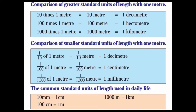Comparison of greater standard units of length with 1 meter: 10 times 1 meter is equal to 10 meters. 10 meters is equal to 1 decameter. 100 times 1 meter is equal to 100 meters. 100 meters is equal to 1 hectometer.